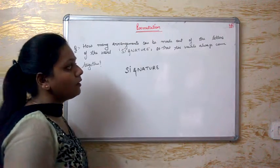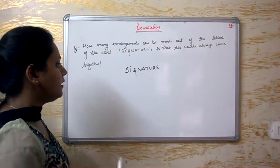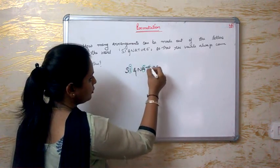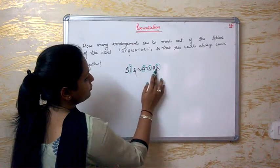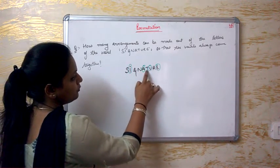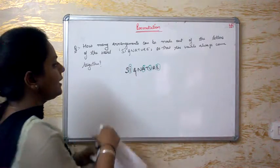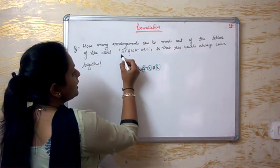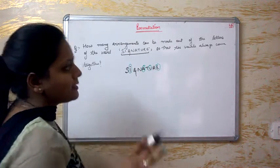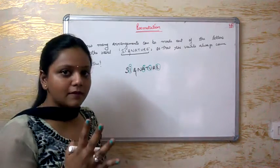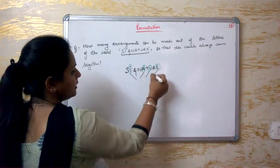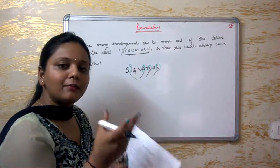Now you need to understand how all vowels come together. First, which are the vowels? I, A, U, and E — four vowels. And the consonants are five. The question asks: how should the letters of the word be arranged so that all four vowels stay together? So I take all the vowels and wrap them into one bundle.